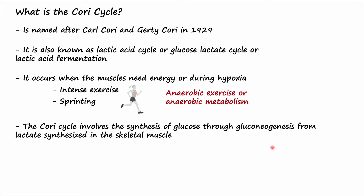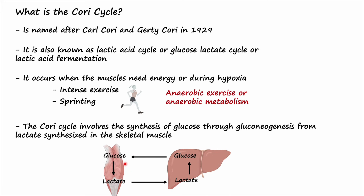When cells generate energy in the absence of oxygen, that is called anaerobic exercise or anaerobic metabolism. The Cori cycle involves the synthesis of glucose through gluconeogenesis, and the starting material for this reaction is lactate, which is synthesized in the skeletal muscles. In the skeletal muscle, glucose is converted to lactate, lactate is transported to the liver, converted back to glucose, and that glucose is transported back to the muscle.